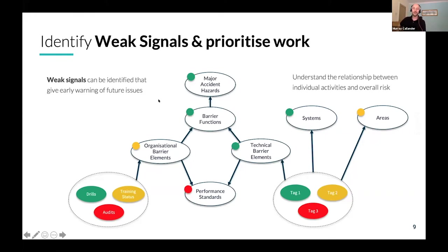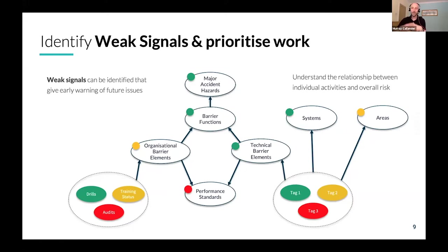What we'll see in the demo is that this ability to take different views helps us drill down to where the problem is. It helps us identify weak signals — like the needle in the haystack — when information is coming from all these places. It also lets us prioritize work because we can see the impact of corrective or planned maintenance on the ultimate protective functions and our risk posture.